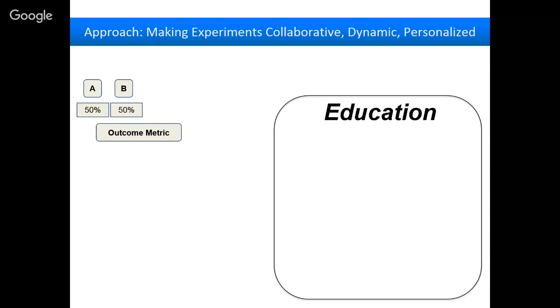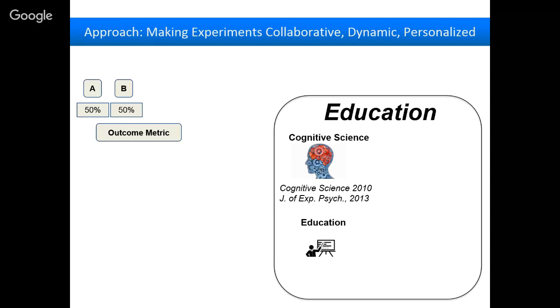My approach is that every time I think of an experiment in education, I think of alternative conditions and an outcome metric. I draw on my training in cognitive science — in my PhD I worked on questions like what prompts help people explain their thinking in ways that help them learn. I also try to bridge this with the interests of education researchers who ask instructional design questions: which question will actually maximize learning?